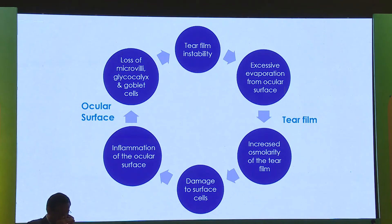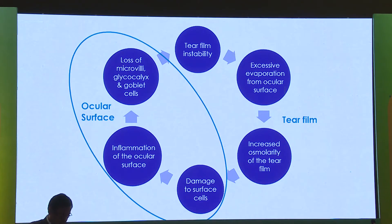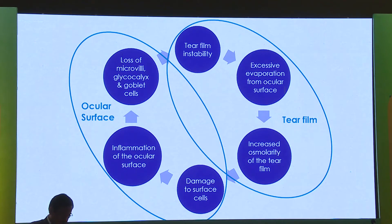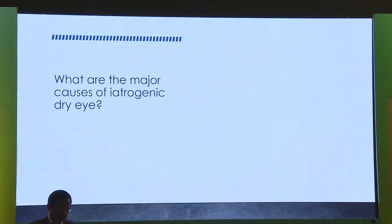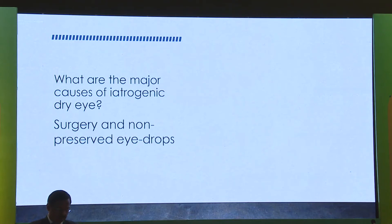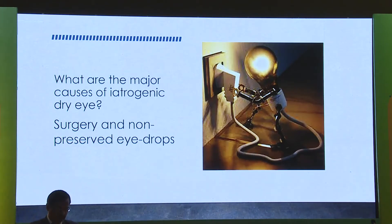You have an ocular surface problem and a tear film problem. You almost need to think about this nowadays as engineering. You have a windscreen, you have the covering — like rain — and in addition you have your wipers. Your eyelid is your wiper, and the engineering of how it spreads the tears around is very important. The dry eye causes that we actually create are firstly surgery, and then the drops we give. So we are one of the main problems of dry eye. Once you realize this, it's almost a light bulb moment — you need to start looking at how you manage it.